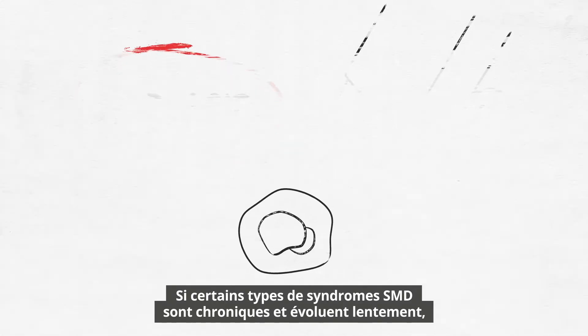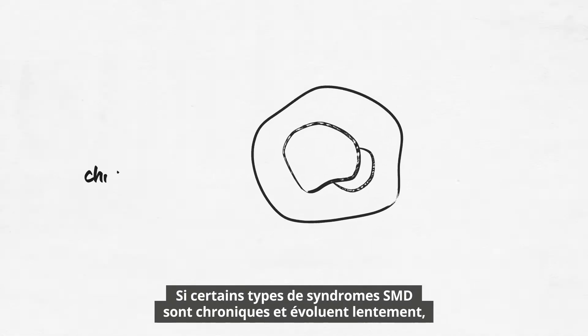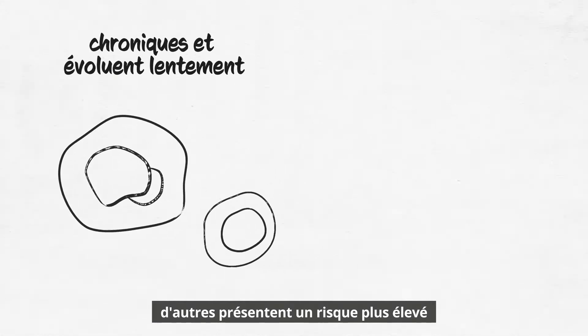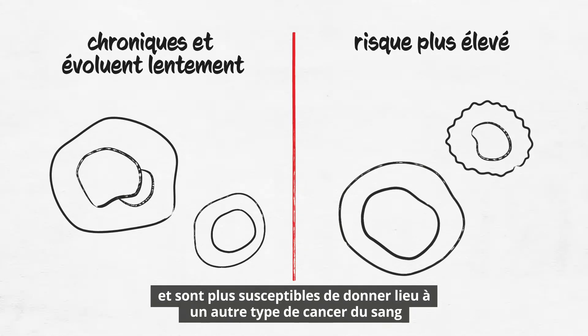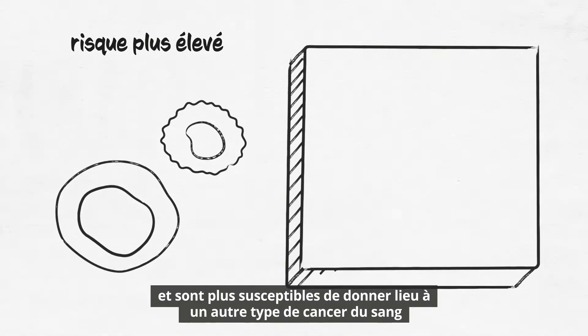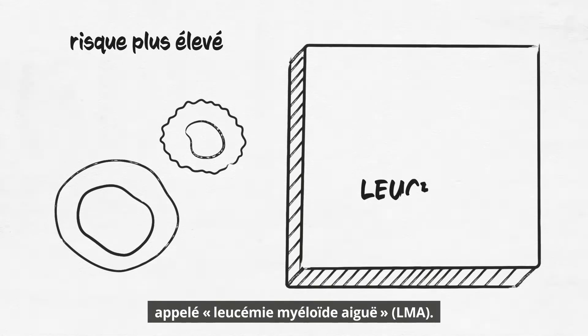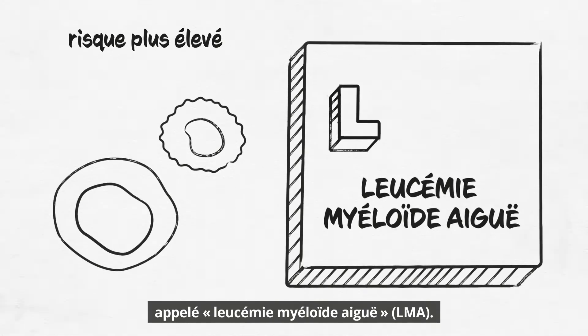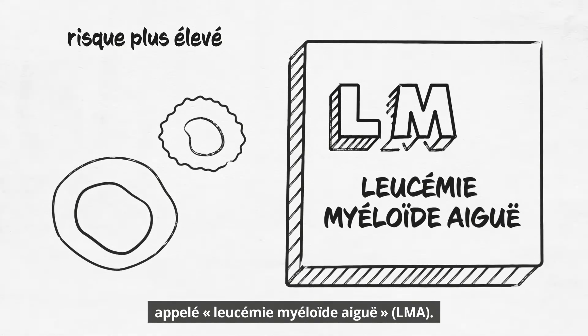Some types of MDS are chronic and slow-moving, while others are higher risk and more likely to develop into another type of blood cancer called acute myeloid leukemia, AML.